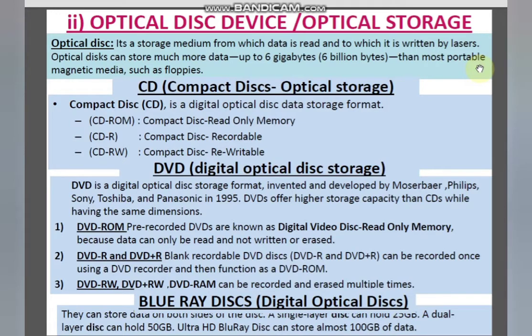Next, optical disk devices. An optical storage device is a storage medium from which data is read and to which data can be written by lasers. Optical disks can store much more data — up to 6 GB — than portable magnetic media such as floppies, which are nowadays obsolete. What we have in optical storage is CD (Compact Disc), DVD (Digital Versatile Disk), and Blu-ray Disc.